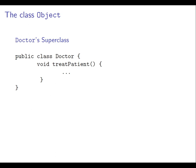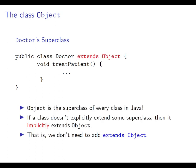Going back to our doctor class, remember this was the superclass in our hierarchy. Actually, it isn't the top, because any class in Java extends the class whose name — somewhat confusingly — is object. If a class doesn't explicitly extend some superclass, then it implicitly extends object, and so transitively every class extends object. You never need to write "extends object" — it's always understood.